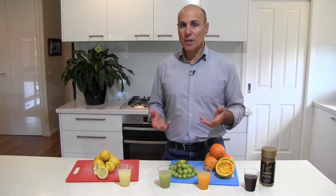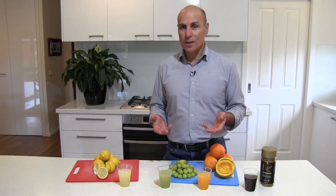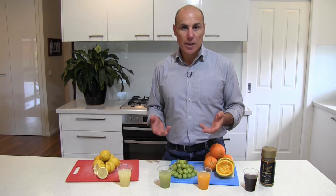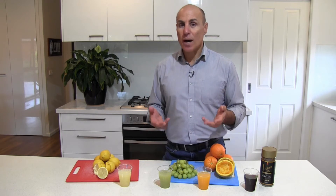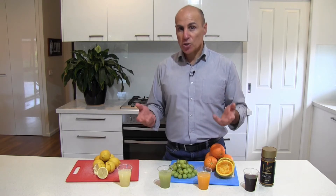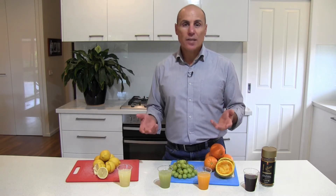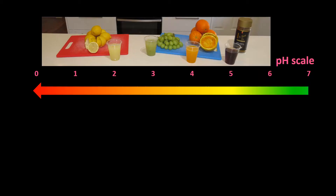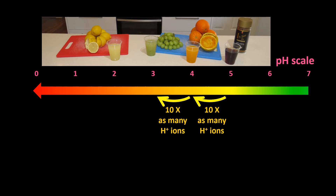For every change of 1 on the logarithmic pH scale, there's a tenfold change in the number of H+ ions, assuming you've got the same amount of liquid. So a cup of orange juice has 10 times as many H+ ions as a cup of coffee, and a cup of grape juice has 10 times as many H+ ions as a cup of orange juice.